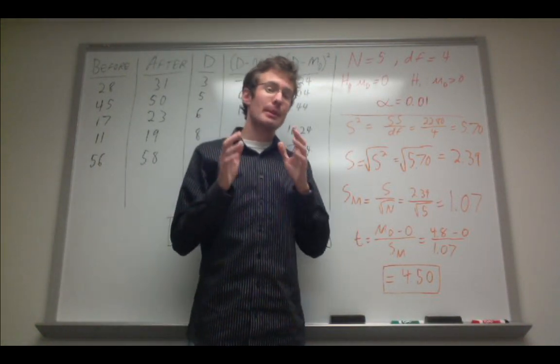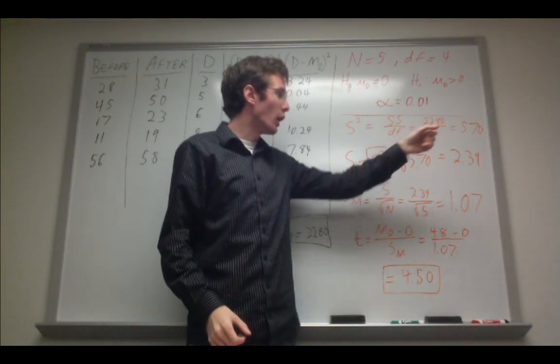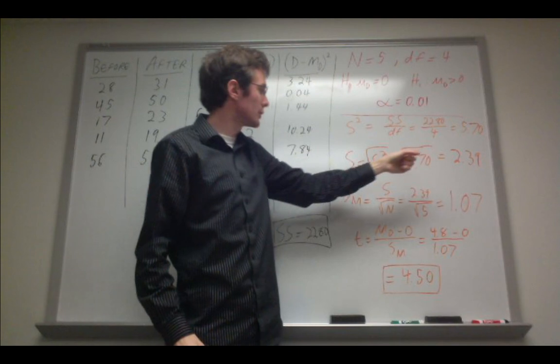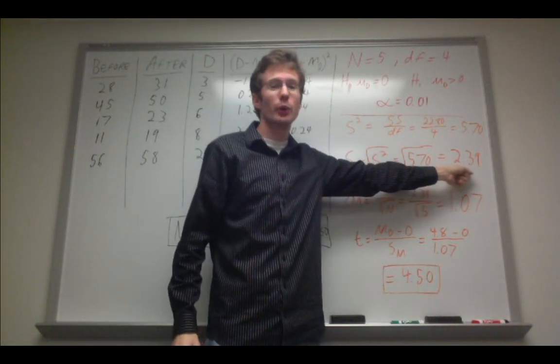All I need to do for the estimated population standard deviation is simply take the square root of this value. So just take the square root of s squared, which is going to be 2.39.